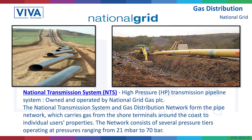The National Grid Transmission System consists of different pressures. We've got high pressure transmissions that can be up to 70 bar — very high pressures — owned and operated by National Grid PLC. The National Transmission System and Gas Distribution Network form the pipe network which carries gas from the shore terminals around the coast to individual properties. Pressure drops from 70 bar in the National Grid right down to the district main and through your gas meter, which comes in at around 21 millibar.